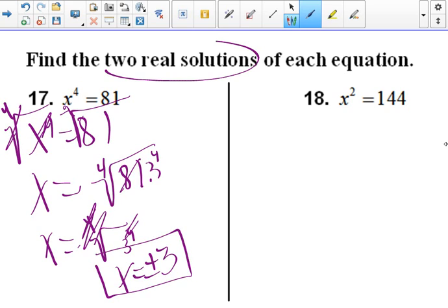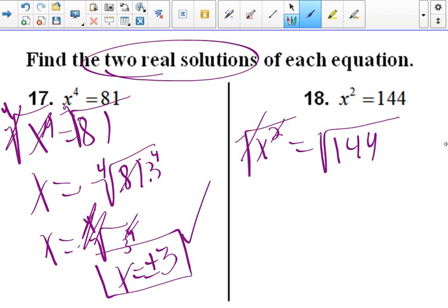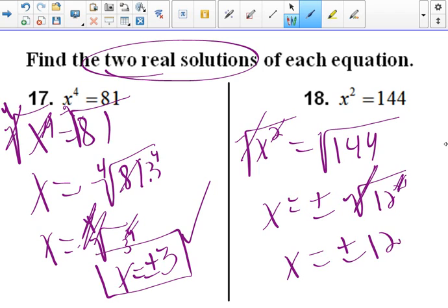And they said the two real solutions. So that's the positive and negative. And over here, we've got x squared of 144. Well, we know 144 is 12 squared. So we can rewrite this as x squared equal... Well, let's take the square root of each side. And then we get x equal to positive or negative the square root of 12 squared. And 12 squared is 144. So that's just going to be x equal to positive or negative 12. And that is our whole homework assignment.